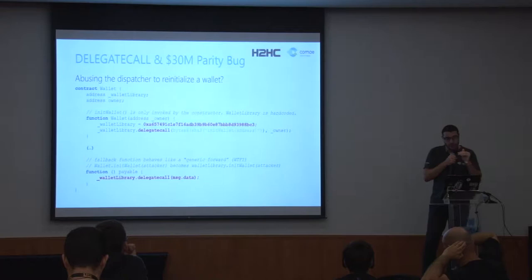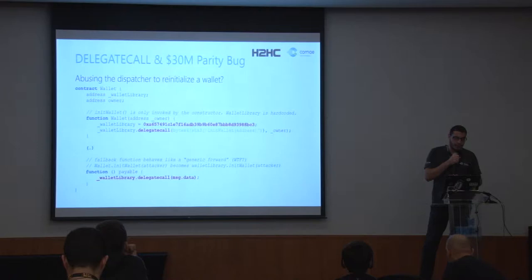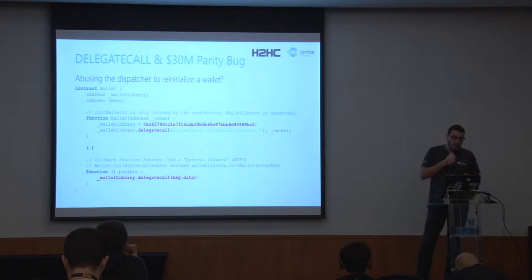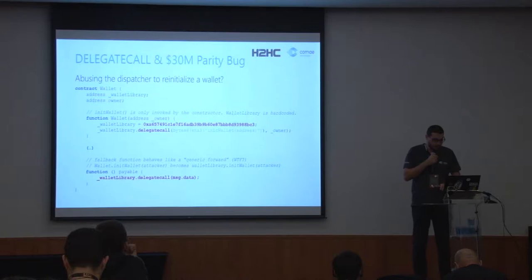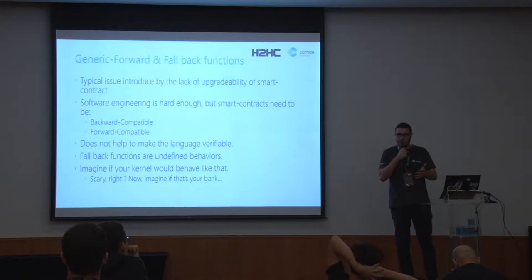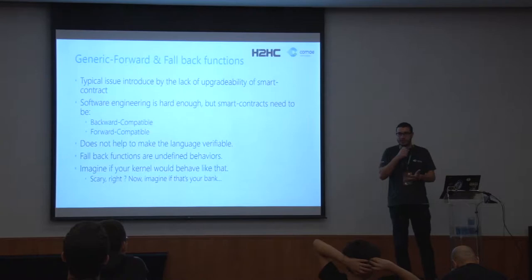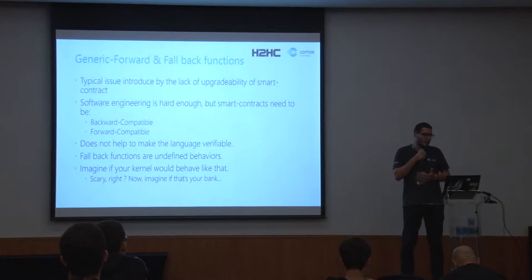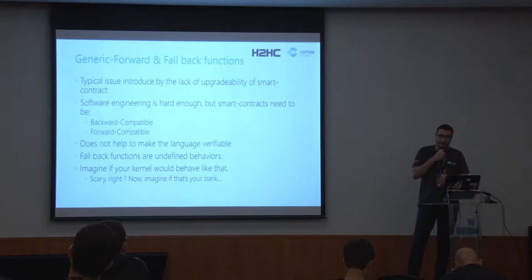If you look further in the code at the bottom, you're going to see there is a function with no name — basically a fallback function — which is executed any time an unknown behavior or unknown hash is called. Why have a fallback function? Because a smart contract is a software layer on top of the actual blockchain, but if you have a security bug you cannot patch it, and if you want to improve it or add a function you cannot patch it either. The fallback function is used here for forward and backward compatibility.